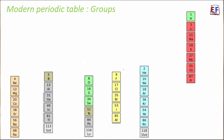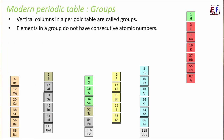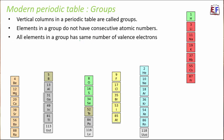Groups are the vertical columns in a periodic table. Elements in a group do not have consecutive atomic numbers — that's obvious because elements placed below one another in a column cannot have consecutive atomic numbers when arranged by increasing atomic number. All elements in a group have the same number of valence electrons.